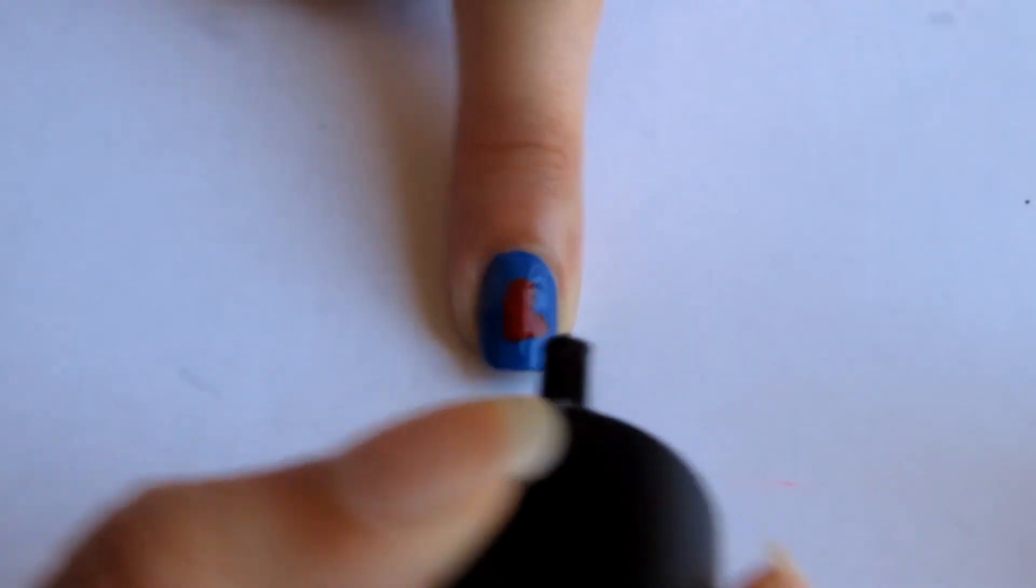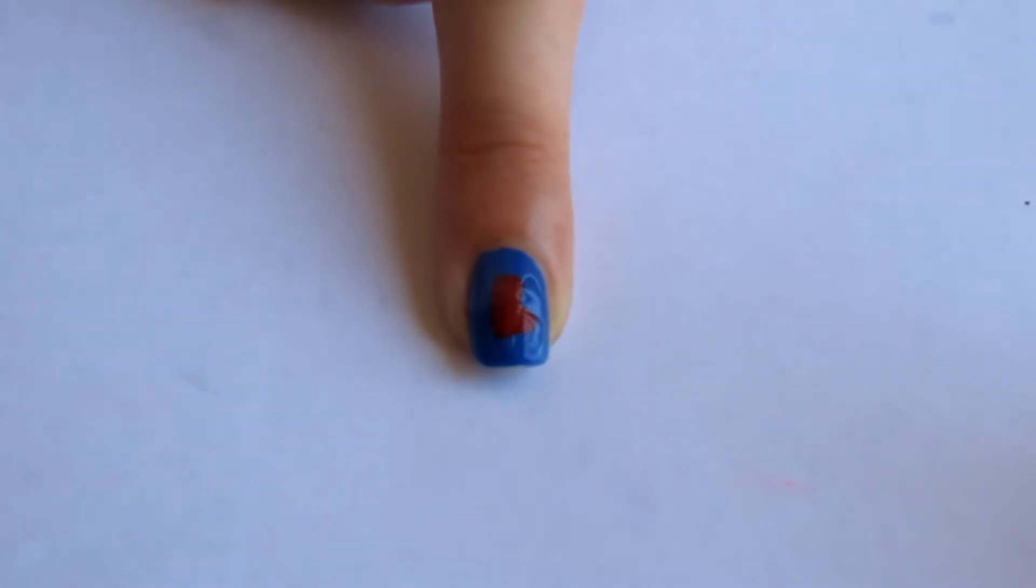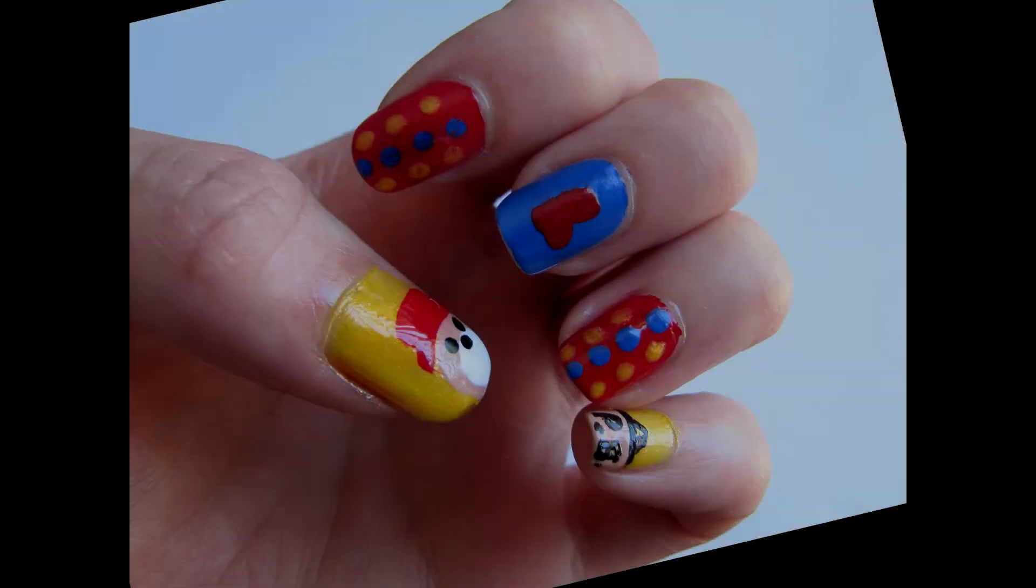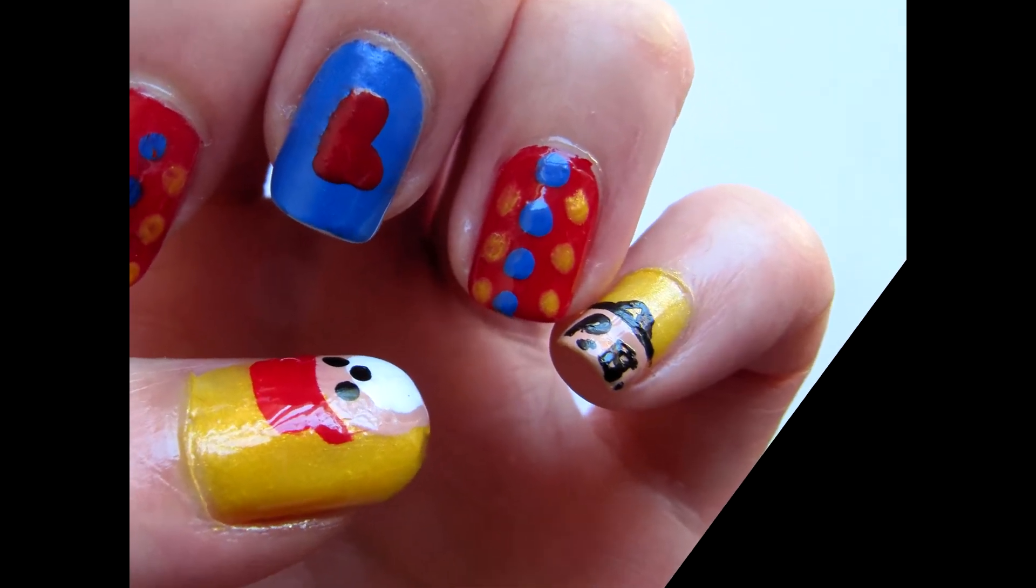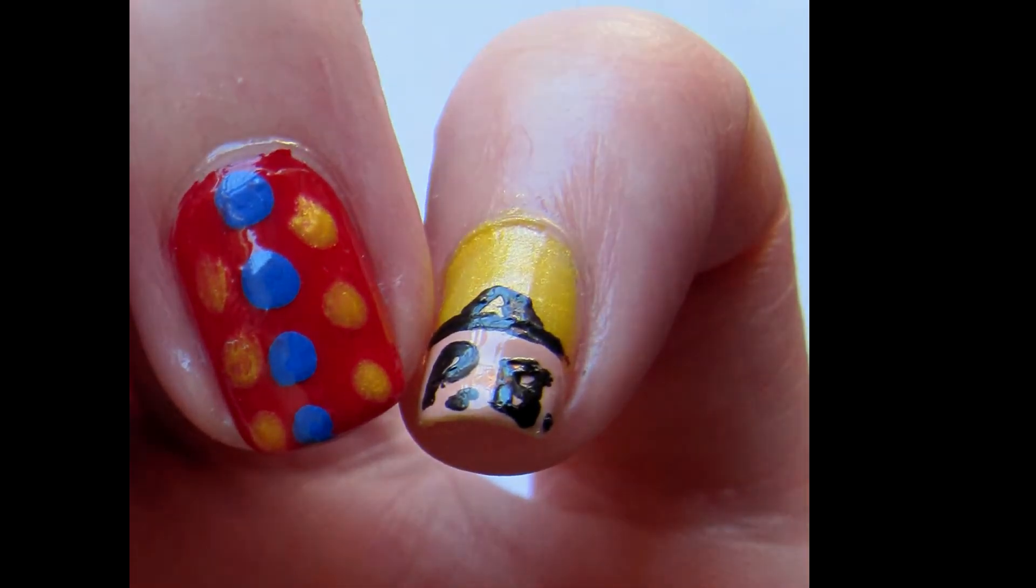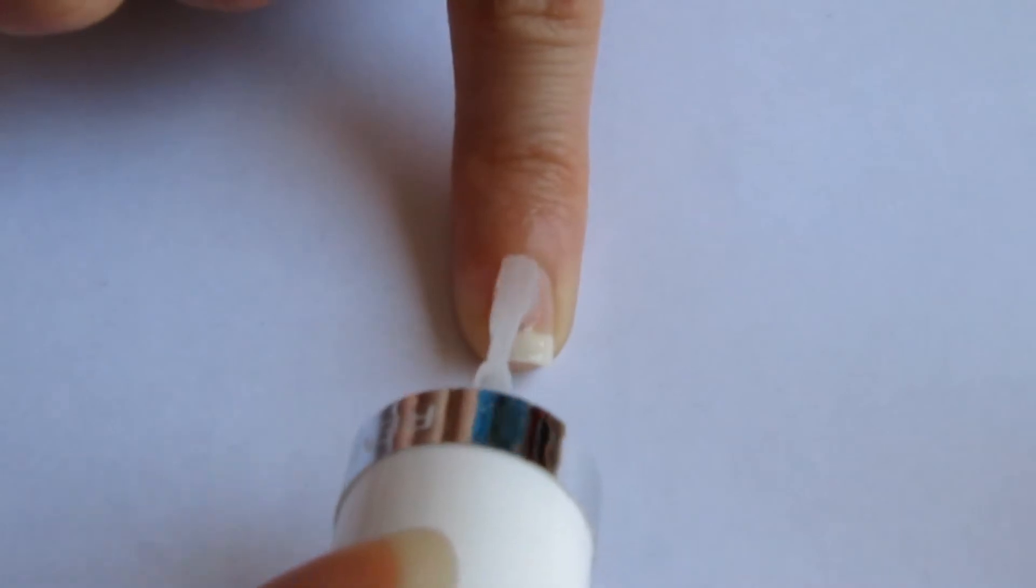Using your red polish shade, draw a thick L shape with roundish edges. Apply your top coat and you're done.